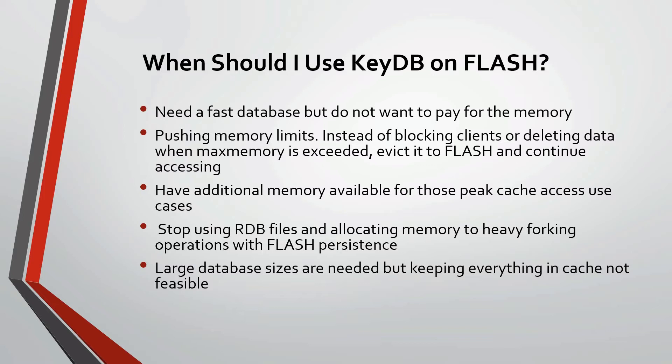If you use QDB on Flash instead of forcefully deleting memory or blocking clients when memory is full, it is evicted to the warm Flash tier where it is still accessible. Maybe you're allocating half of your memory towards RDB backups — with QDB on Flash, your data is continually persisted to Flash, so running heavy forking operations such as BGSave are not required. Sometimes with a really large database size, it's not always feasible to keep all the data in memory, especially if you're not already spreading your data across many shards. Even with sharding, a Flash tier can provide many benefits.